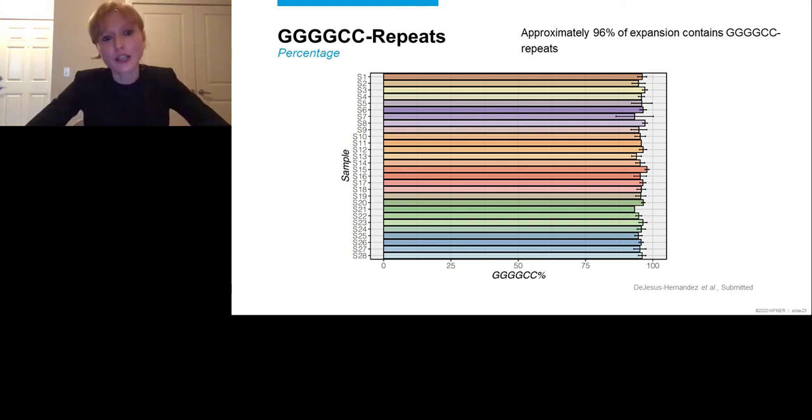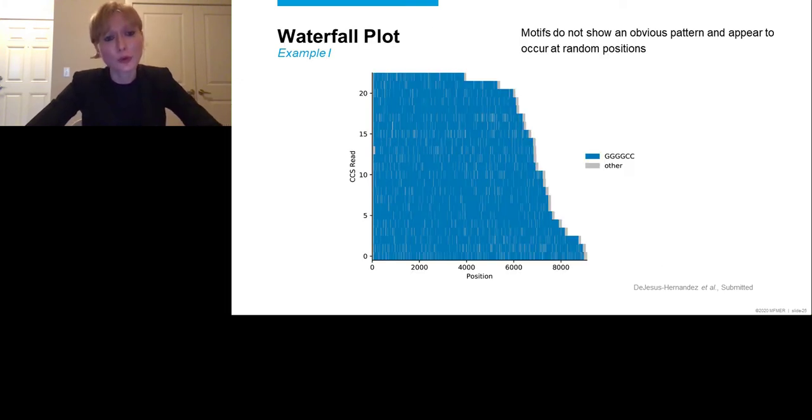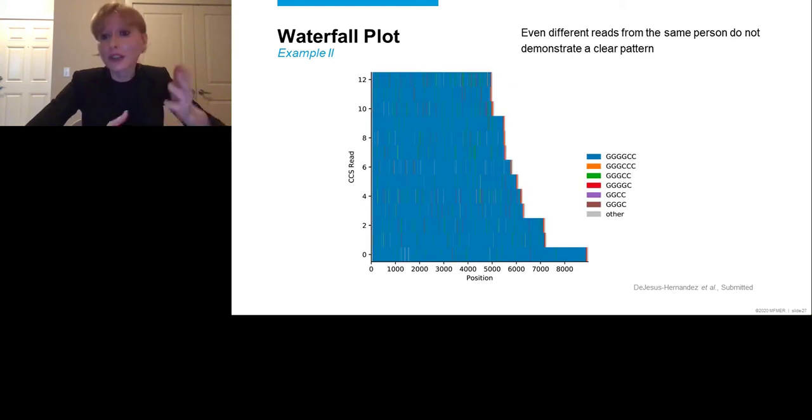We then looked at the expansion itself, and you can see that here, the GGGGCC repeat. And again, every single individual is included, individual 1 to 28. But this time, the bar represents the percentage GGGGCC. And it's not 100%. It's not. But it's pretty close. It's actually 96%. So that seems to indicate that the expansion is relatively pure, and that interruptions, at least in the cerebellum of these individuals, account for less than 5% or 4% of the expansion. You can also visualize it using a waterfall plot. And this is a waterfall plot for one particular individual with more than 20 CCS reads, which are shown on the y-axis. And on the x-axis, you can see the position of the nucleotides. If the GGGGCC repeat is present, the hexanucleotide repeat we're interested in, it's blue. If another sequence is present, another motif, it's displayed in gray.